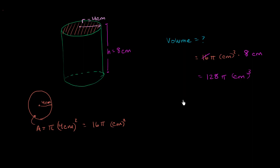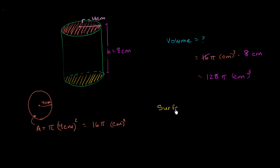Now, how would we find the surface area of this figure? Part of the surface area comes from the two circular faces — the top and the bottom. So we'll have 2 times 16 pi centimeters squared. That covers the top and the bottom of our soda can.